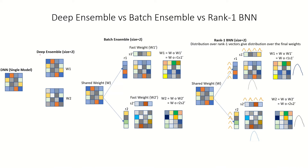Hello everyone and welcome back to the continuation of the previous video where we were seeing how weight matrices are defined for different deep learning ensemble methods for uncertainty estimation. For deep ensemble, it's basically creating as many copies of the network with different initializations. For batch ensemble, we have shared weights, then for each ensemble member we define rank-one vectors to compute the weight for that member. For rank-one BNN, it's similar to batch ensemble but the rank-one vectors have a distribution.